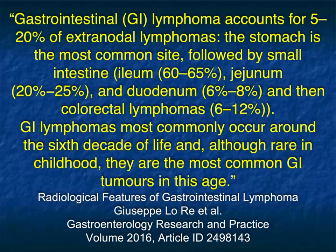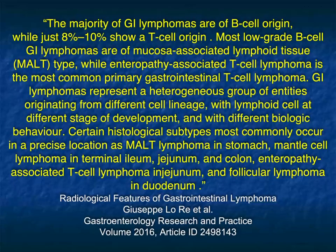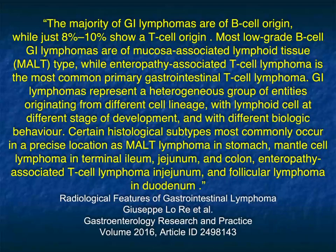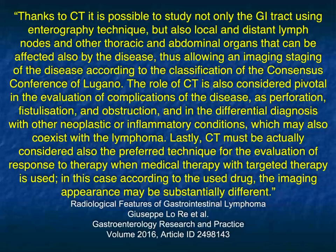GI lymphomas most commonly occur around the sixth decade of life, and although rare in childhood, they're the most common GI tumors in that age population. The majority of GI lymphomas are of B-cell origin, while up to 10% show a T-cell origin. Most low-grade B-cell lymphomas are mucosal-associated lymphoid tissue types — MALT lymphoma — while enteropathy-associated T-cell lymphoma is the most common primary GI T-cell lymphoma. GI lymphomas represent a heterogeneous group of entities originating from different cell lineages, and the pathology will define in part treatment and outcome.